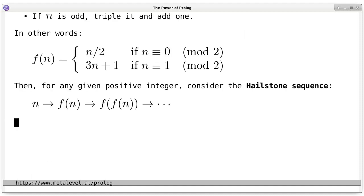Then, for any given positive integer, we consider the so-called Hailstone sequence, which is simply the iterated application of this function f.